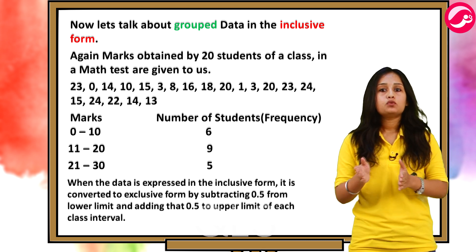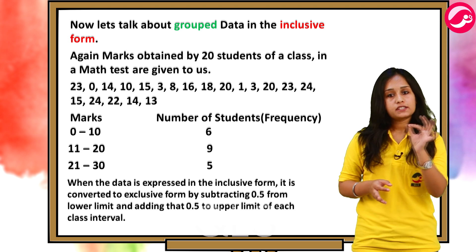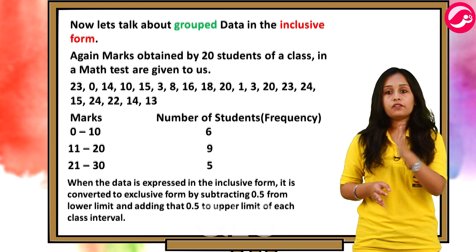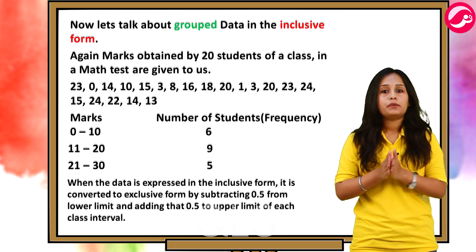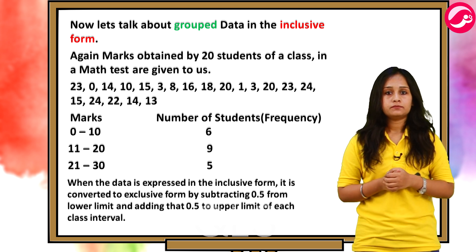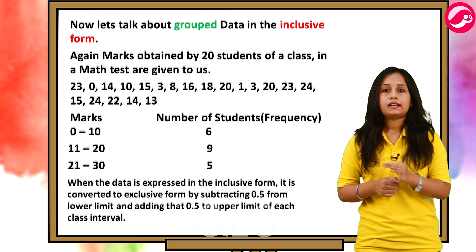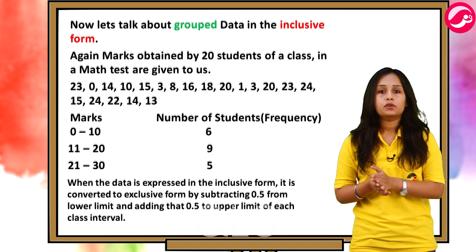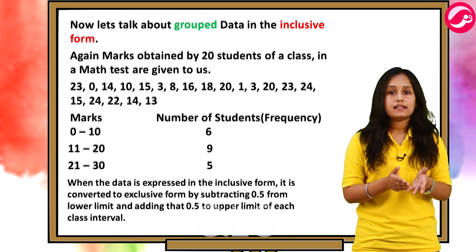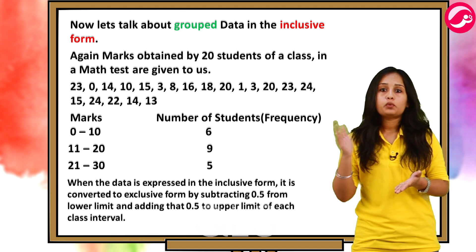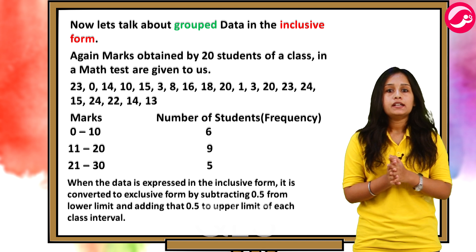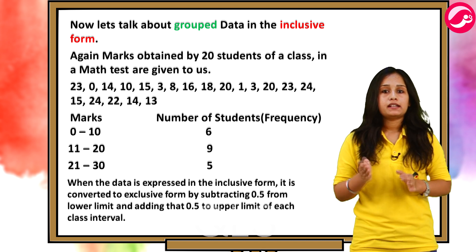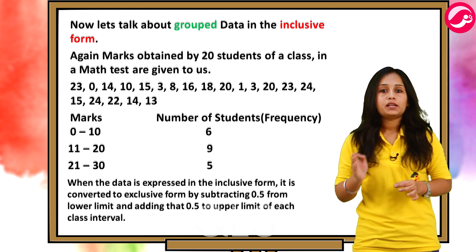When the data is expressed in the inclusive form, it is converted to exclusive form by subtracting 0.5 from lower limit and adding that 0.5 to upper limit of each class interval. So, 11 to 20 is expressed in the inclusive form which can be changed and taken as 10.5 to 20.5 which is the exclusive form of the data. Similarly, 21 to 30 can be taken as 20.5 to 30.5.